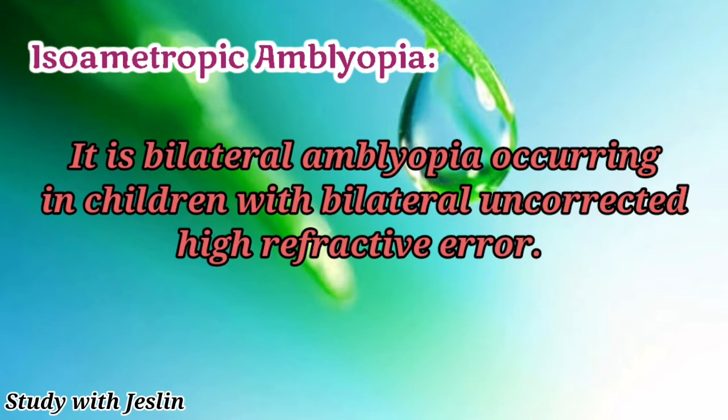Isoametropic amblyopia is bilateral amblyopia occurring in children with bilateral uncorrected high refractive error. 'Iso' means equal, 'ametropic' means refractive error — so isoametropic means both eyes have refractive error equally. That is why isoametropic amblyopia affects both eyes.